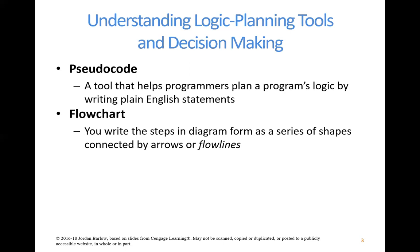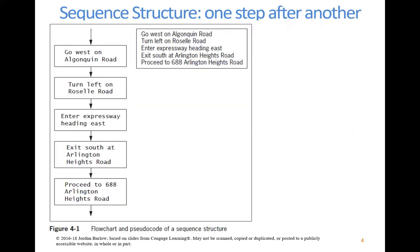Flowcharting is a visual way to conceptualize your application before you write it in code, using a series of shapes and arrows. Here is a sequential flowchart — an example of giving directions to someone: go west, then turn left, then enter the expressway, then exit south, then proceed. This is a straightforward flowchart. If we were to flowchart any of the programs we've done up to this point in the course, the flowchart would look something like this — just one step, then the next, then the next.